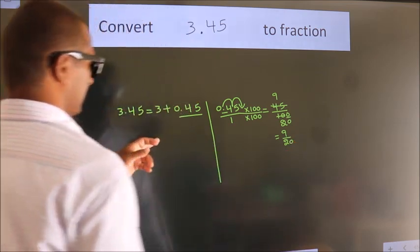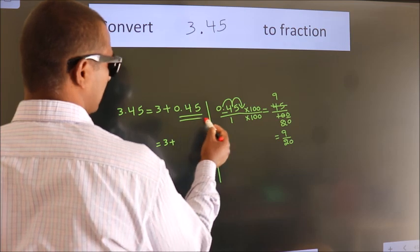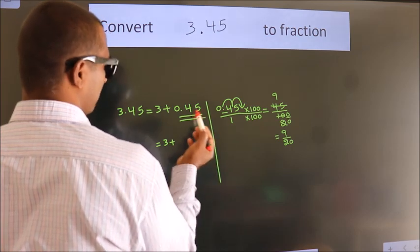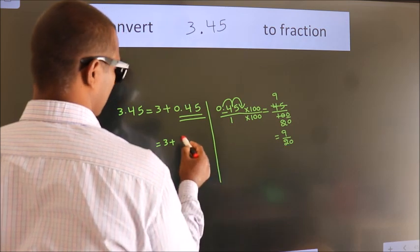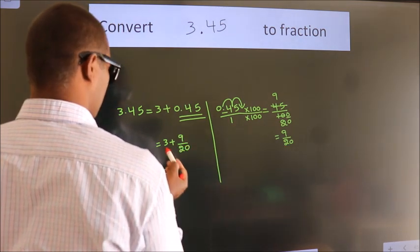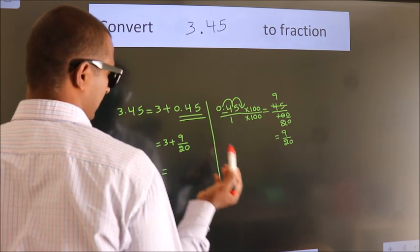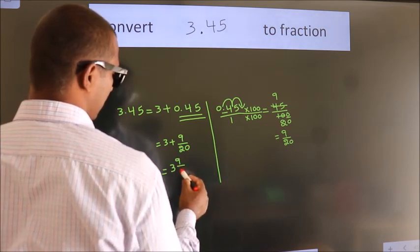Now here, 3 plus in place of 0.45, now we write this fraction, 9 by 20. 3 plus 9 by 20. In mixed fraction it is 3 and 9 by 20.